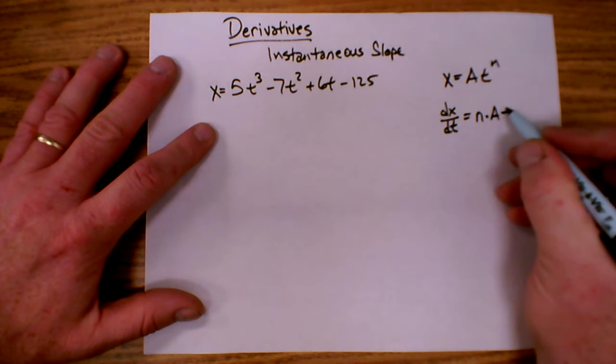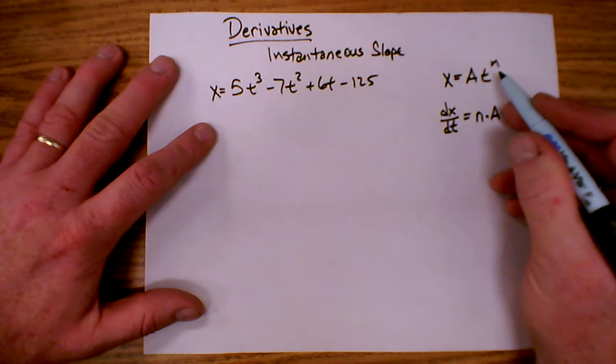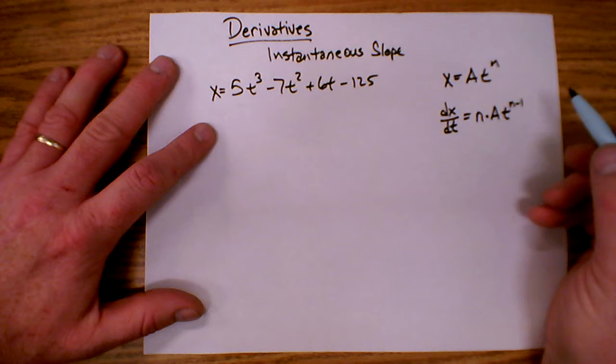So n times a, t, and I raise it to the n minus 1 power. I reduce that exponent by 1.